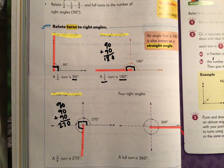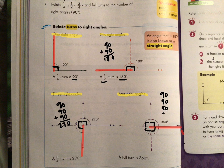So that's four right angles. And we know that one right angle is 90 degrees. Another right angle is 90 degrees. Another right angle is 90 degrees. And that fourth right angle would be 90 degrees. So 90 plus 90 plus 90 plus 90 gives us 360 degrees. So a full turn would be 360 degrees.